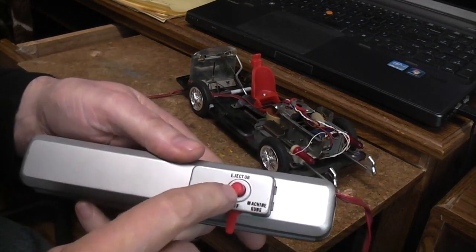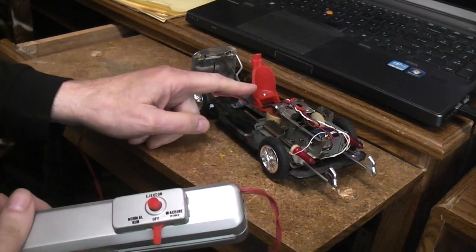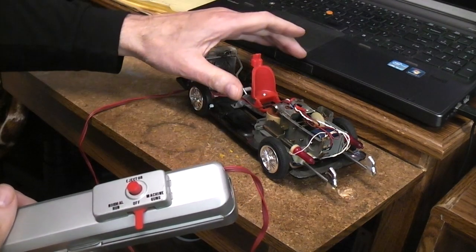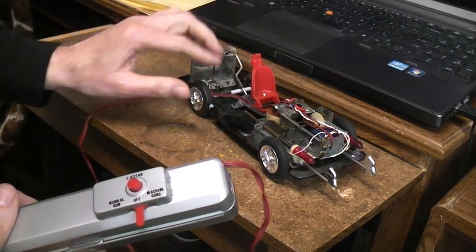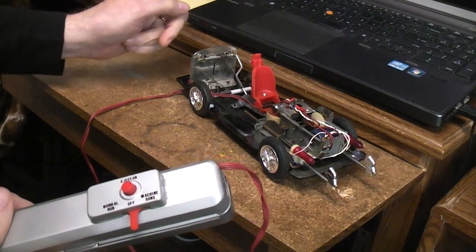When you're in either one of those two modes, if you push the eject button, then the seat, which is on a lever, normally the body would only let it go up so far. With no body here, it's going to swing all the way up and back.